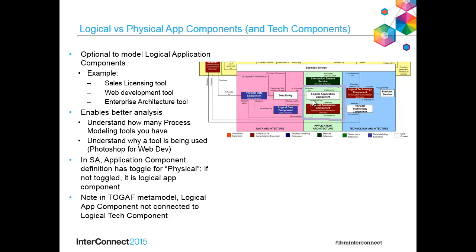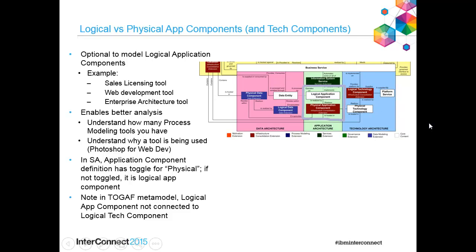Notice in the TOGAF metamodel that logical application components are realized by physical application components. Physical application components have a relation to the technology components. System Architect as a physical app uses a technology application like Microsoft SQL Server for the underlying database. Microsoft SQL Server as a technology component is related to a logical technology component like database. But there is no relationship between a logical app component and a logical technology component — that would be too much information, and TOGAF does not have you create that relationship, although some clients have customized the metamodel to capture that.